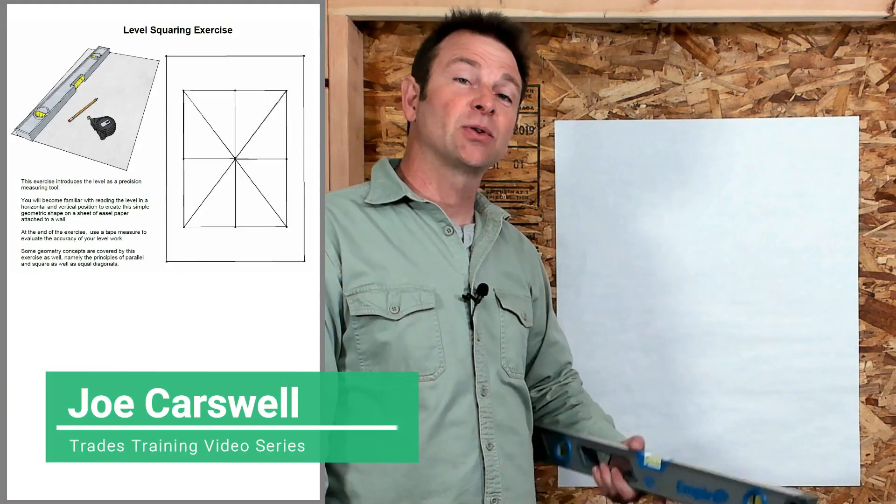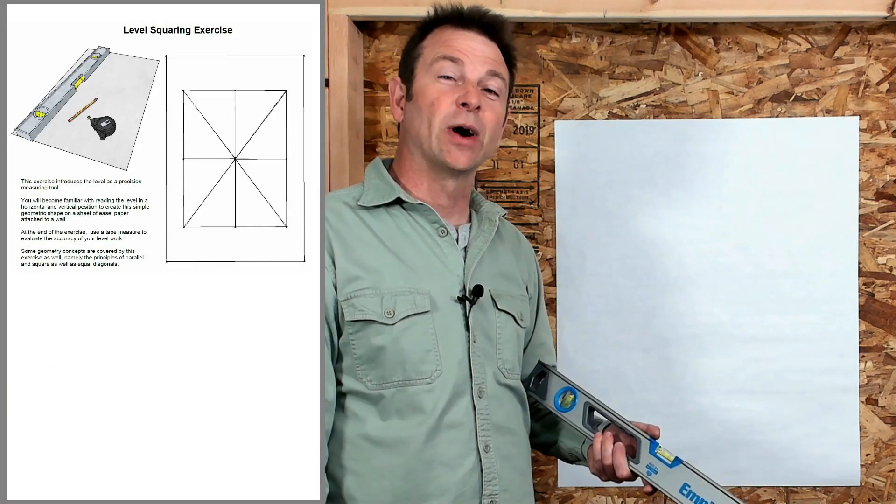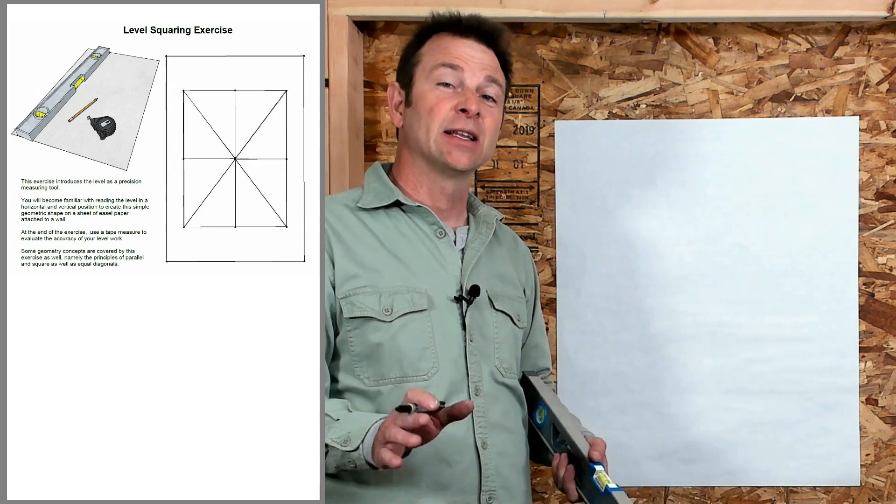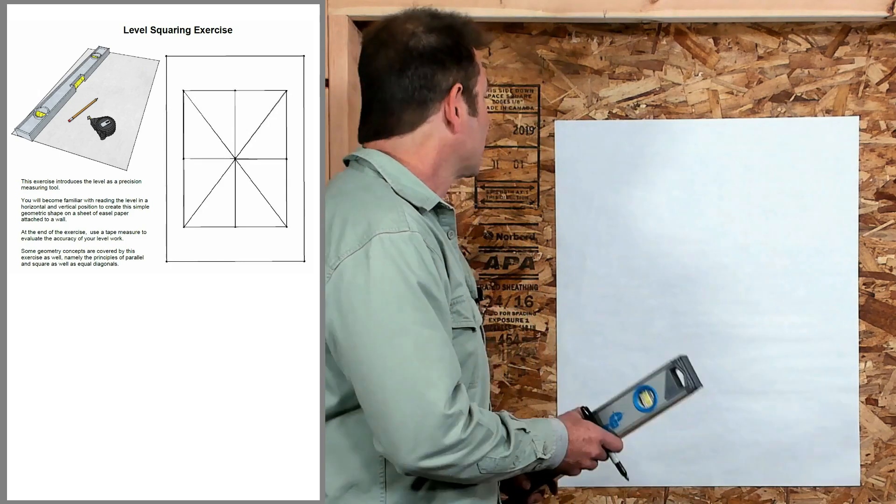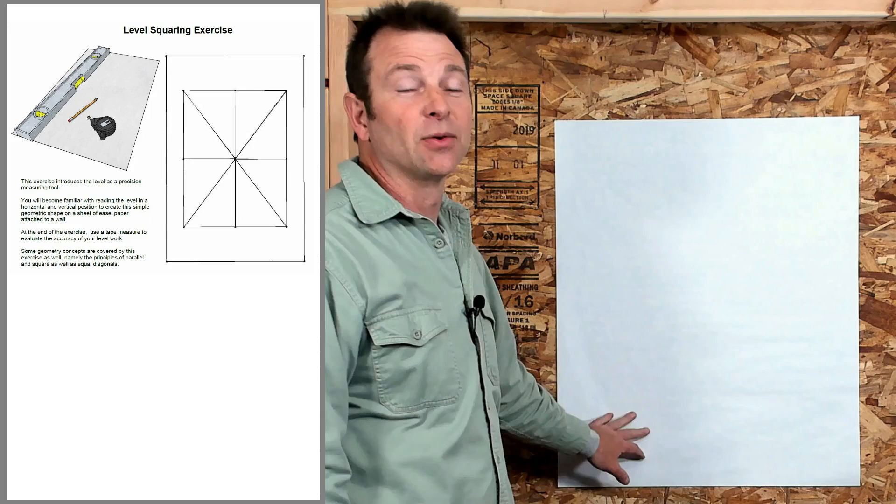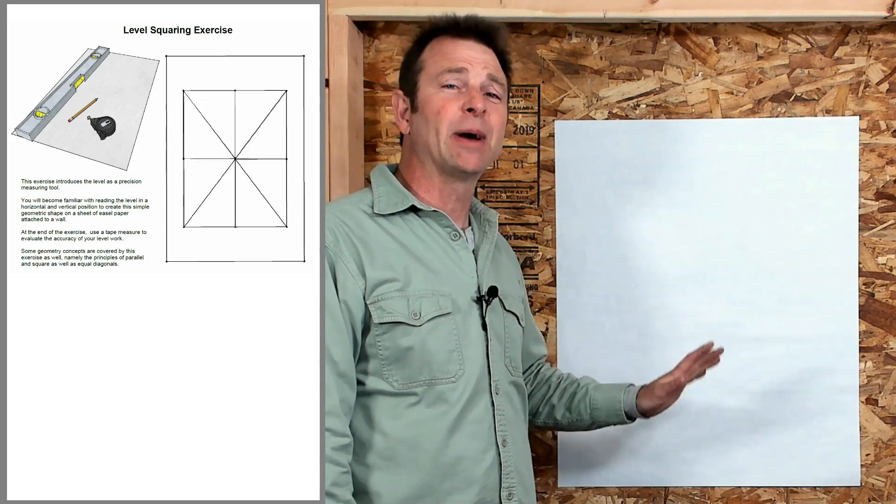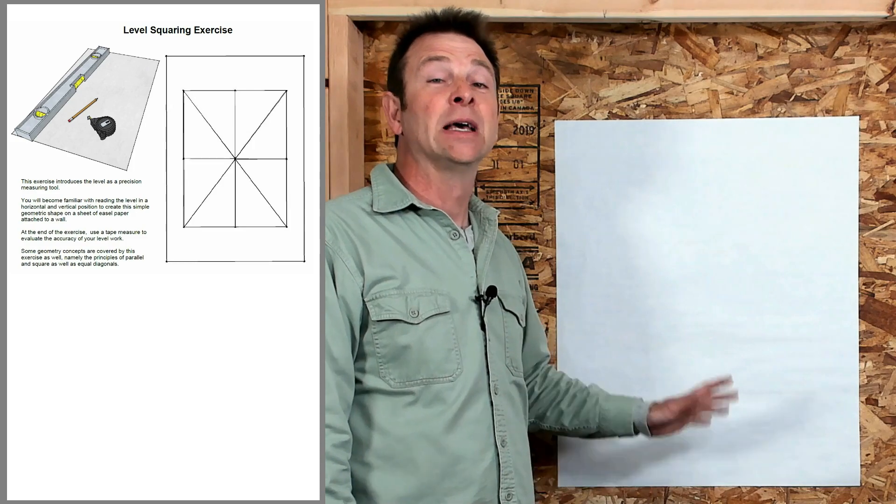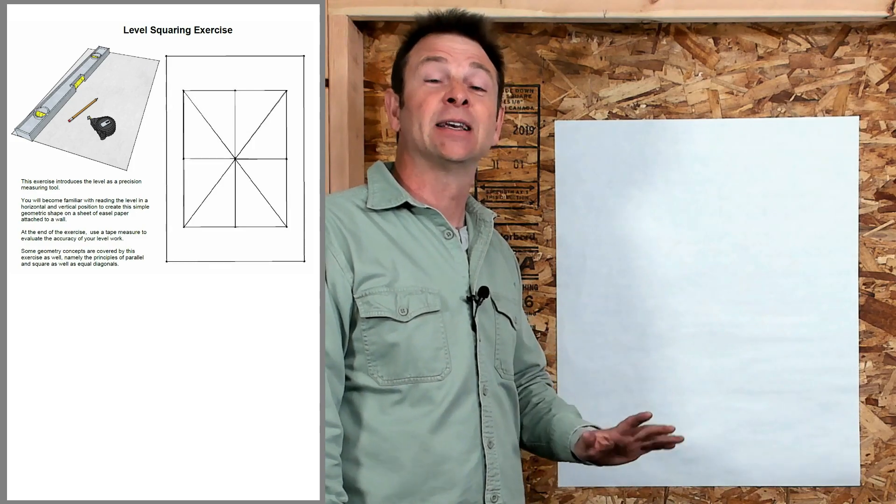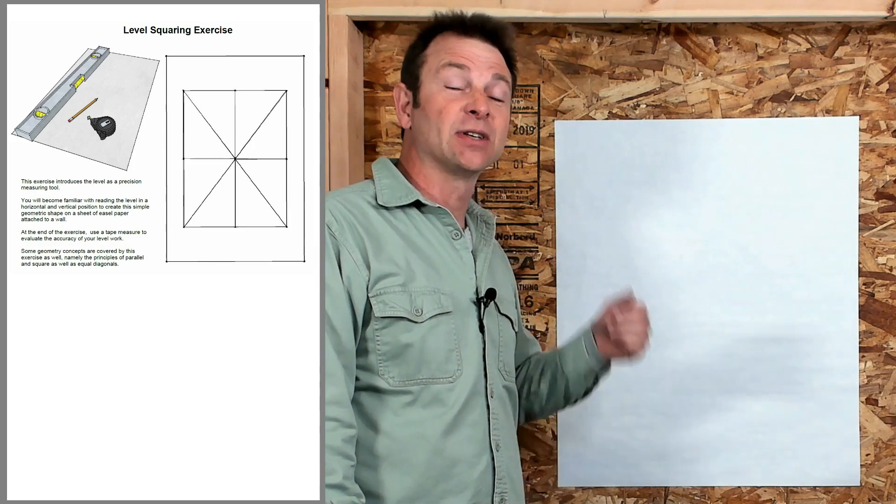Hello everybody, welcome to another skills exercise review. This one is going to use the level to do some squaring, a very simple exercise. Let's get into it. To start with, we need a piece of easel paper. This will be provided to you. Stick it up on the wall, don't worry about how straight it is. Actually, the more crooked it is the better for this exercise.